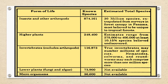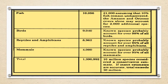This table depicts the different life forms and their known species and estimated total species. Among these life forms, it starts from insects and other arthropods — this is the known species number. Similarly, higher plants, invertebrates, lower plants, and microorganisms are listed. Another part of this table depicts other groups of biodiversity such as fish, birds, reptiles, amphibians, and mammals. Finally, it gives us the total number of species present at global level, including all life forms shown across both slides.